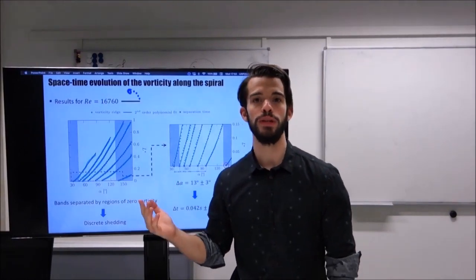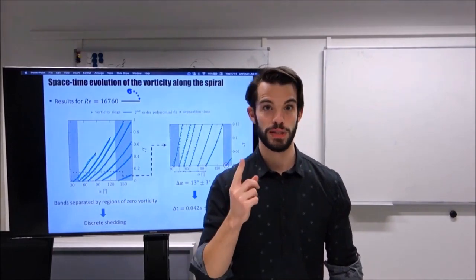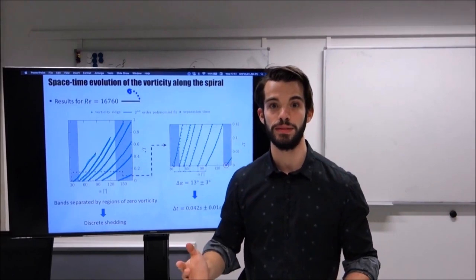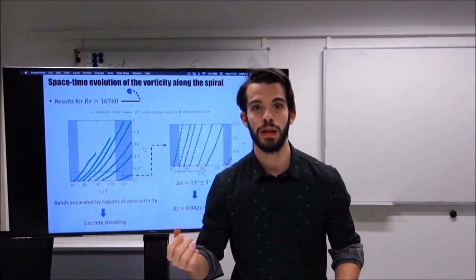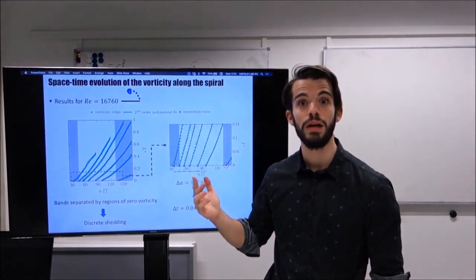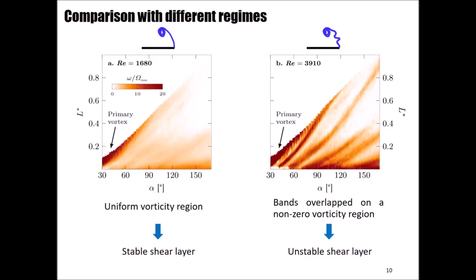I have now explained how I computed the timing of secondary vortices in degrees and seconds only for one Reynolds number. But the same exact methodology is used for all the tested cases we have, even at lower Reynolds numbers. So for the results section, let's first have a look at the space-time vorticity evolution along the spiral for lower Reynolds numbers. Contrary to the previous case, at the lowest Reynolds number, the space-time vorticity plot appears as a region of constant vorticity, which proves a stable shear layer with no sign of secondary vortices.